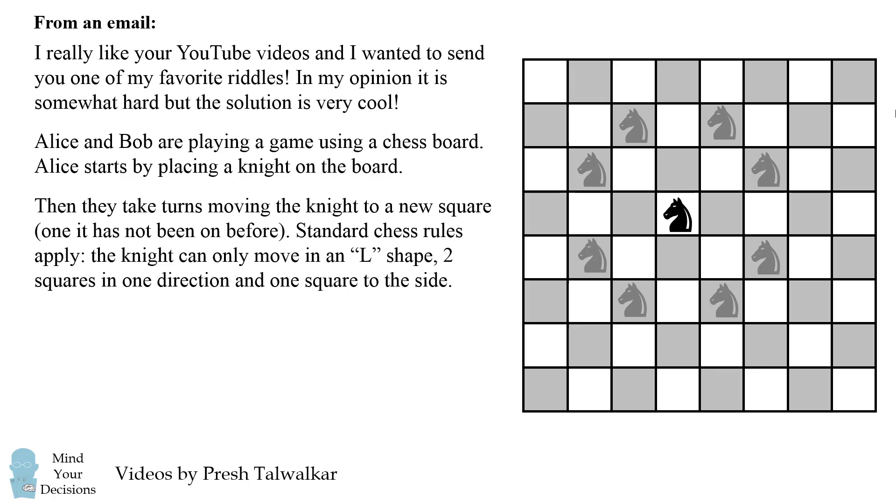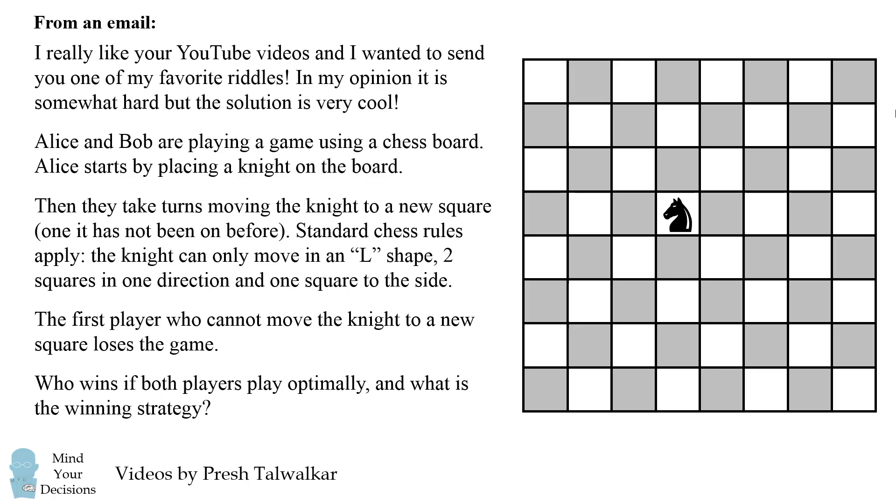Each time the knight moves it has to move in this L shape. The first player who cannot move the knight to a new square loses the game. Who wins if both players play optimally and what is the winning strategy?